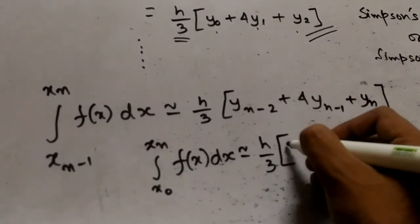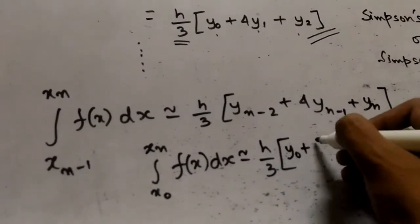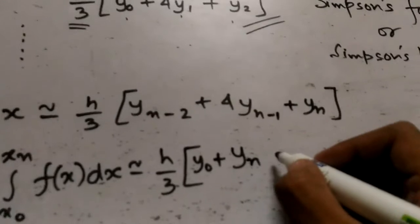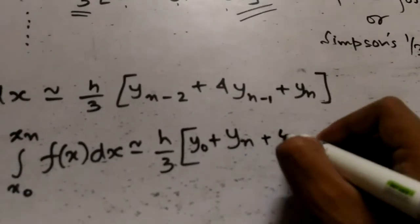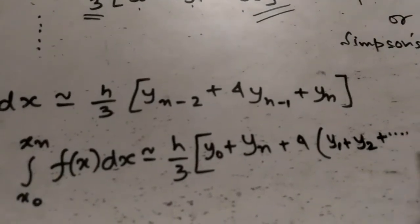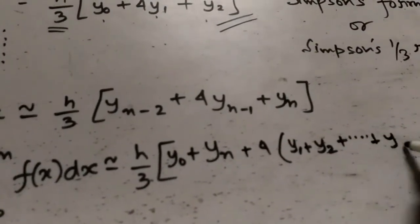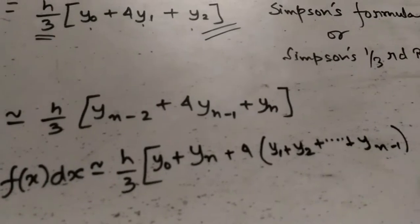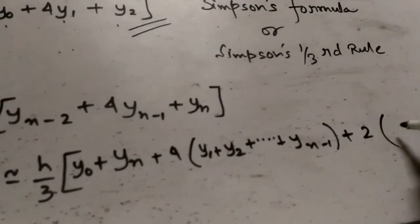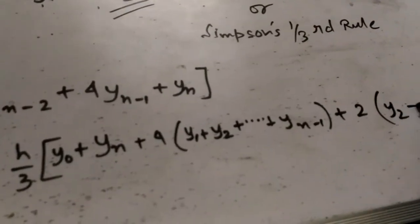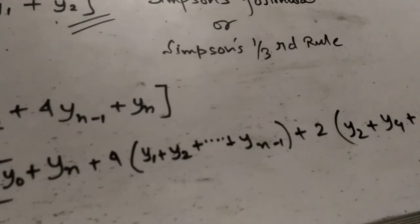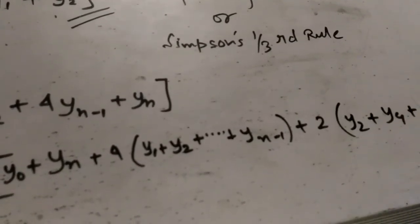Plus 2 times y2 plus y4 plus dot dot dot up to yn-2.